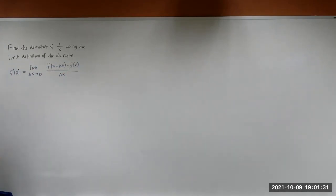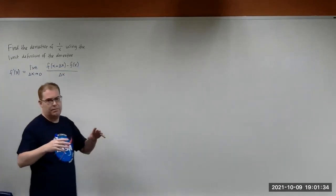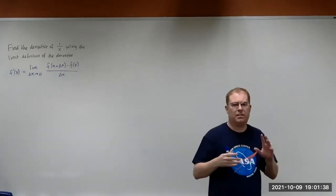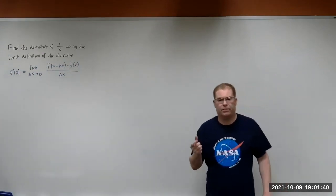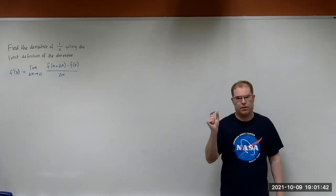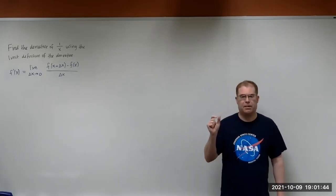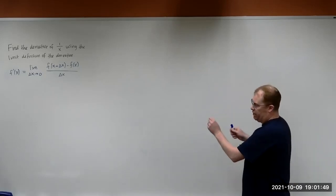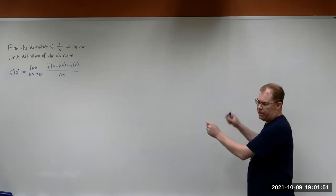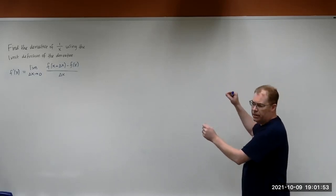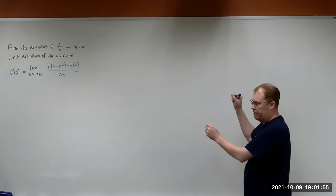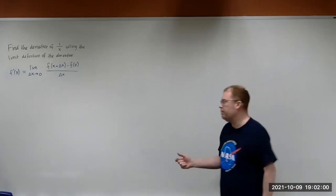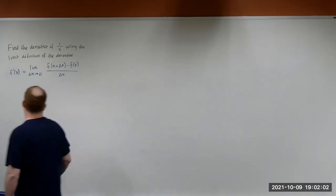In some books, instead of delta x, they may use h, they may use s — they can use different letters. So delta x, remember, it's just a single variable. It just means that you have a fixed point, that's where your tangent point is, and then there's another point on the graph. As that point gets closer and closer to the fixed point, delta x is getting smaller. That's all that means.